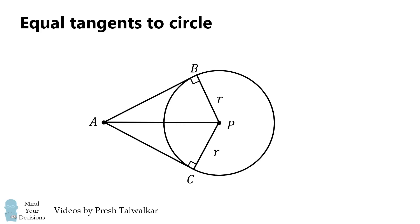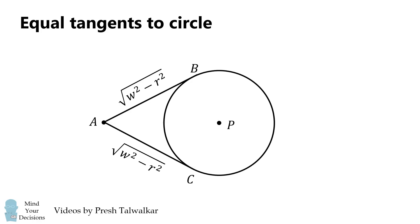To be more explicit: AP is the hypotenuse of length W. Therefore the remaining leg in each right triangle equals the square root of W squared minus R squared. That's true in both right triangles, so AB is exactly equal to AC.